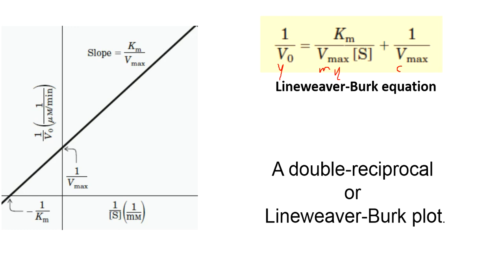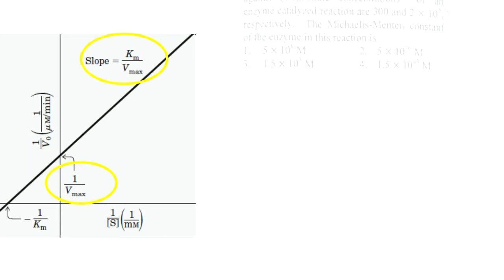Here, please note that the slope of this plot is Km/Vmax, and the intercept is 1/Vmax. This is the main thing.